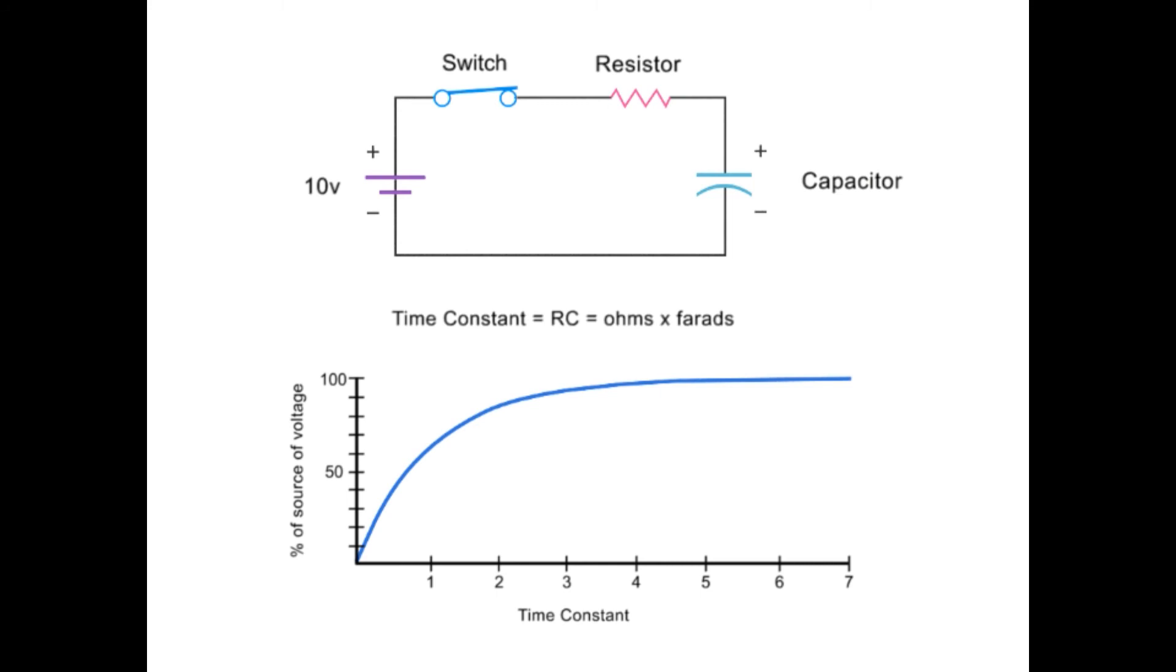For example, in this circuit, if you have a one megaohm resistor and five microfarad capacitor, the time constant would be five seconds. Therefore, for each five seconds of elapsed time, the capacitor will achieve its corresponding voltage percentage until it reaches an effective charge after five time constants.